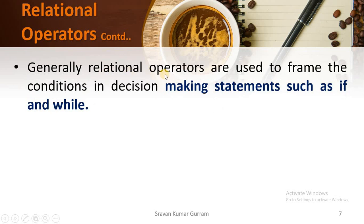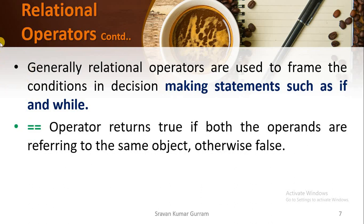We can use relational operators to frame conditions in decision-making statements, which we will discuss in coming videos. While working with decision-making statements like if statements, for loops, or while loops, we need to frame one condition, and to frame such conditions we use relational operators. The == operator returns true if both operands refer to the same object; otherwise it returns false.